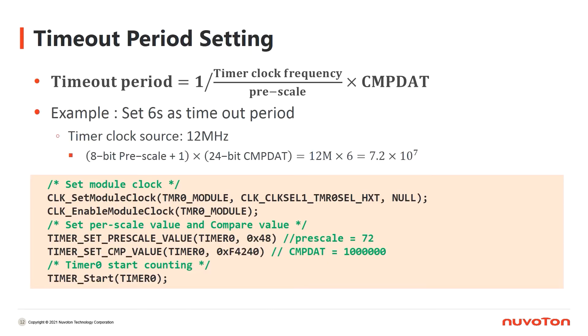We are going to show you how to set up a basic timer by the timeout period calculation formula. For a basic timer, except for clock source, you have to set registers for both Prescale and Comparator. You can get the values of Prescale and Comparator by the calculation formula. For example, if you use a clock source with 12 MHz and want to set up a timeout period as 6 seconds, by the formula, the values of Prescale and Comparator would be 72 and 1 million.